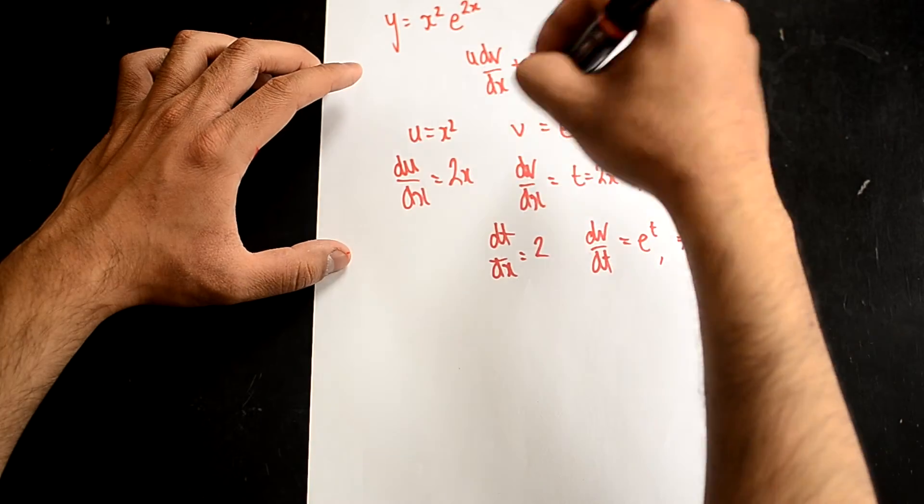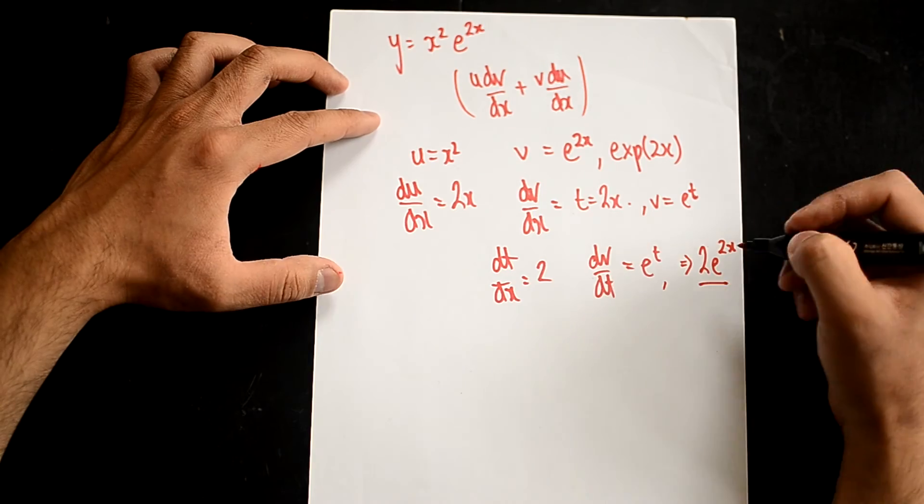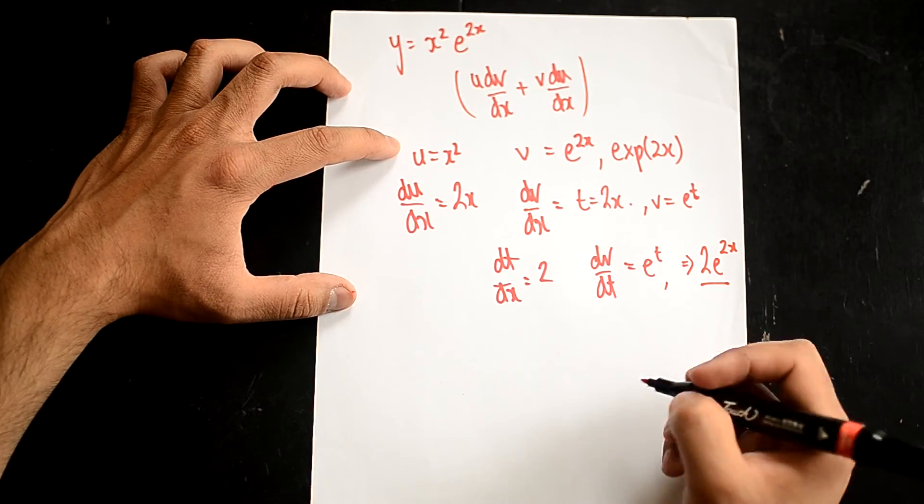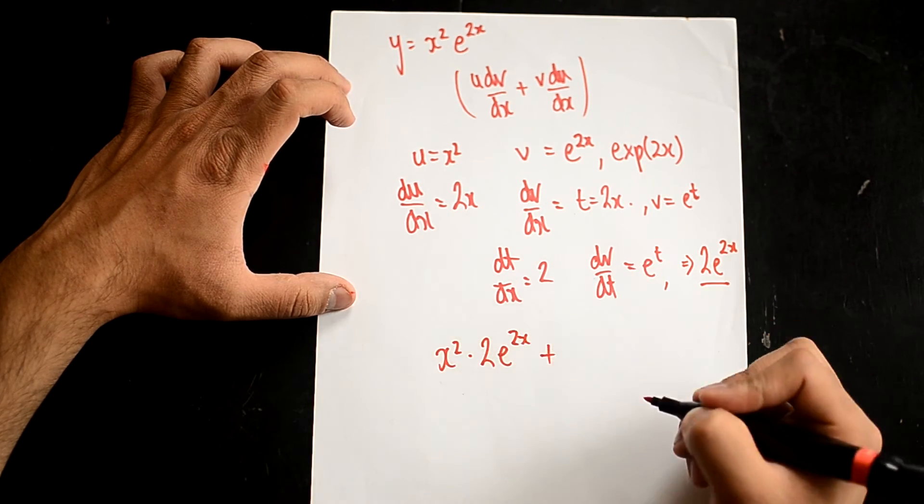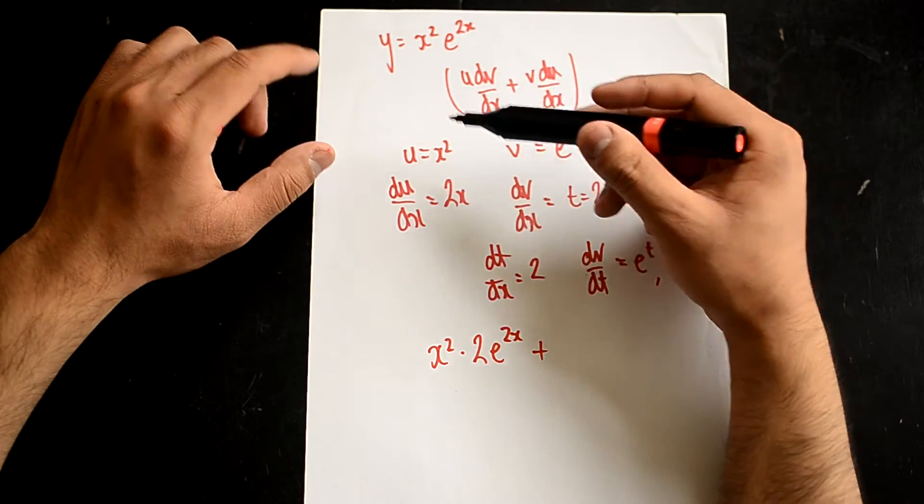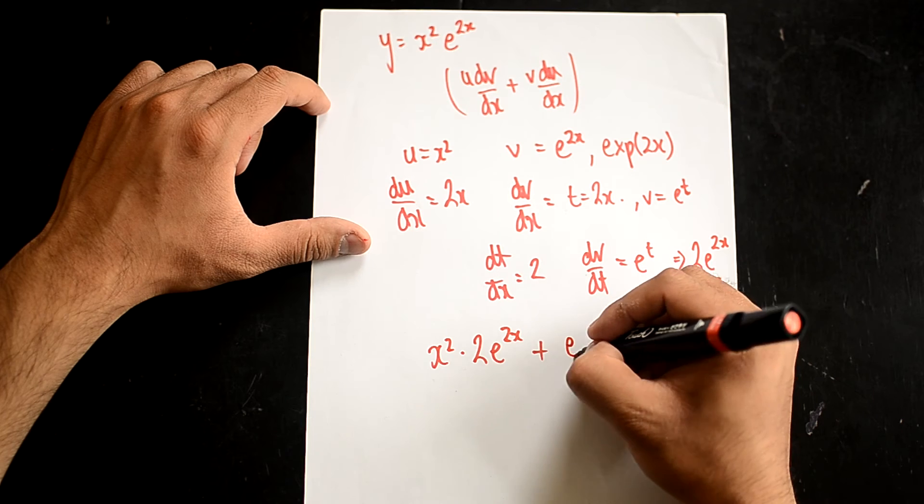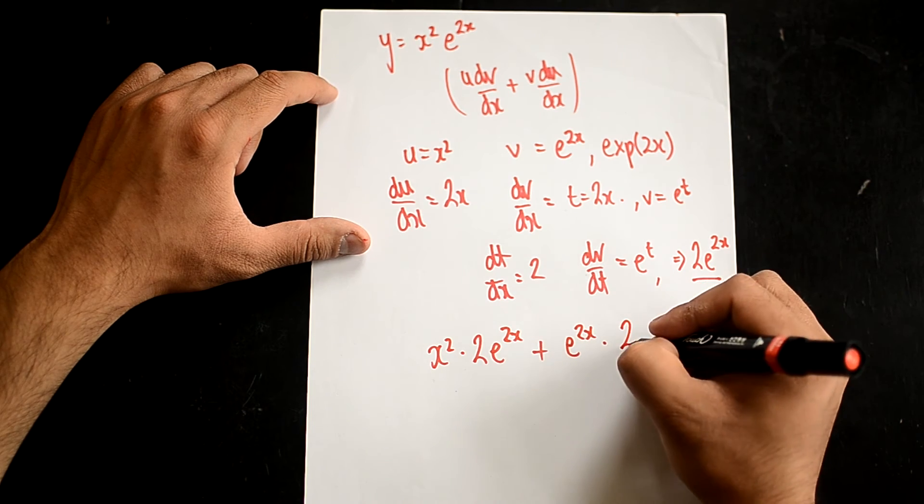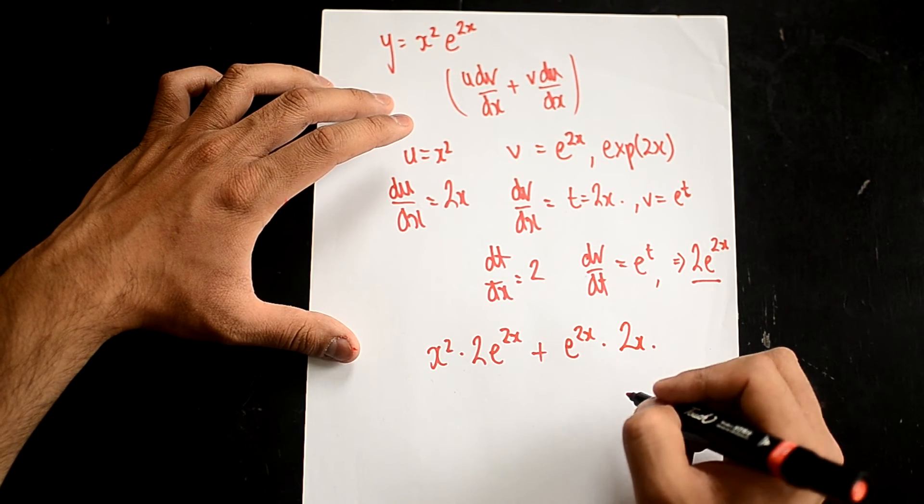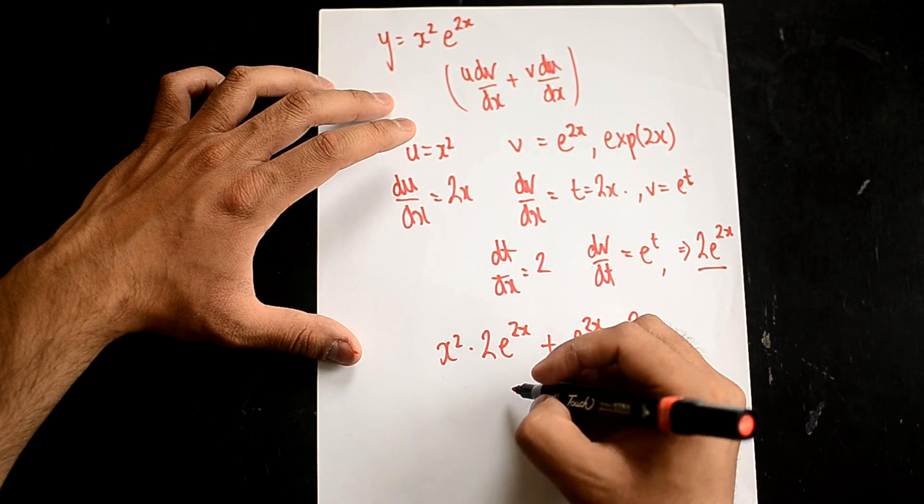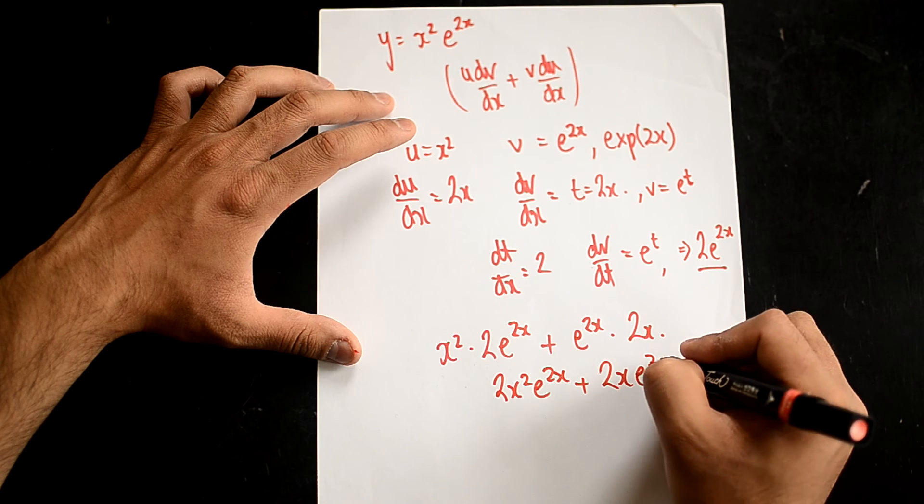So, now here, let's use the product rule equation. And here we're going to get u dv/dx, so you've got x squared multiplied by 2e^(2x), plus v du/dx, so you've got e to the 2x multiplied by 2x. So, my answer here is going to be, well, actually, I can simplify it all out. I'm going to get 2x squared e^(2x) plus 2x e to the 2x.